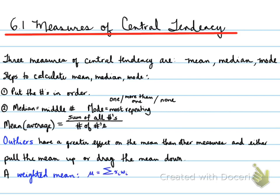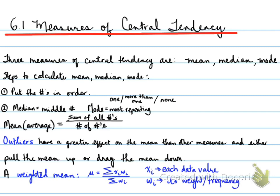A weighted mean — we use mu (μ) to represent it — is equal to the sum of all the numbers times their weight, divided by the sum of all the weights. So x represents each data value (x1, x2, x3), multiplied by the weight or frequency of each number, divided by the total weight or total frequency. Mean means all numbers have the same weighting; a weighted mean means each value has a certain weight, a certain importance level.